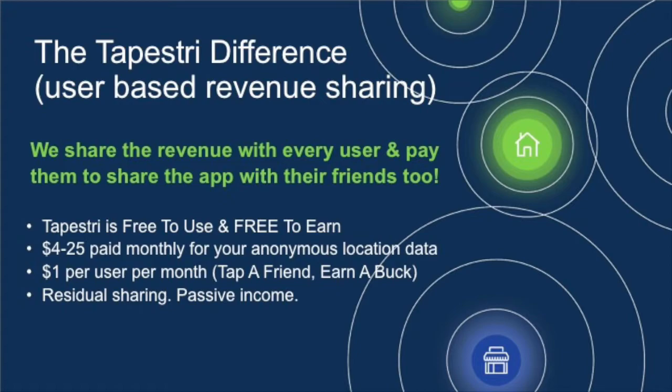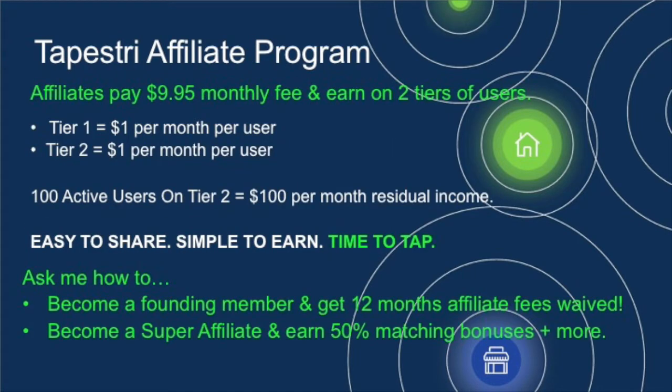Our affiliate program is accessible after installing and activating the Tapestry app. Affiliates pay a $9.95 subscription fee per month, which covers processing, tracking, and an affiliate dashboard to earn one dollar per user per referral on their own personal referrals. And then anybody who they refer, they will also earn a dollar per month on tier two. It's easy to share, simple to earn, and time to tap.